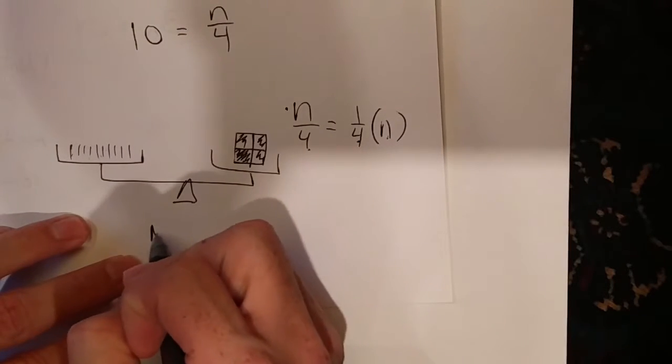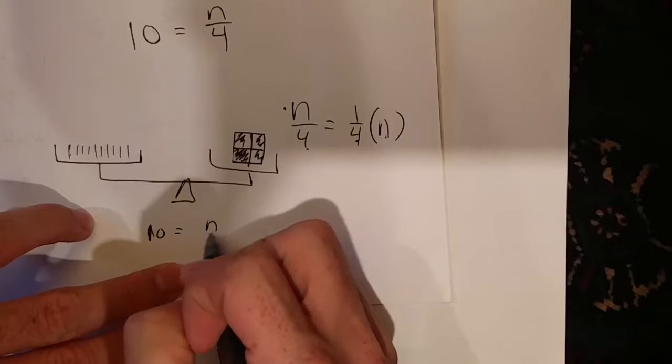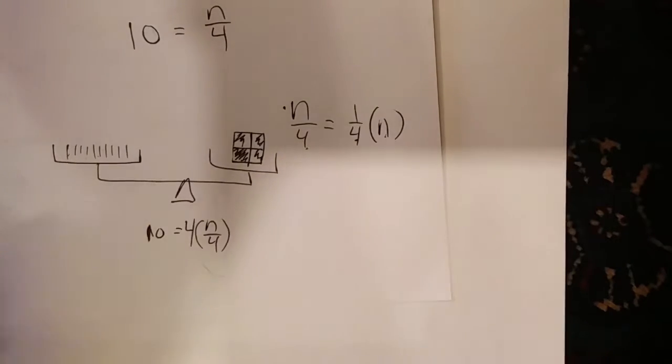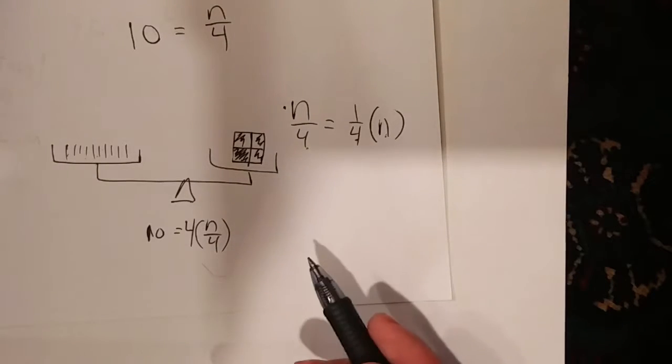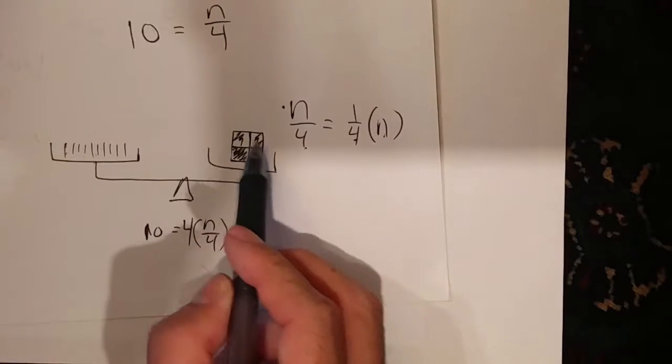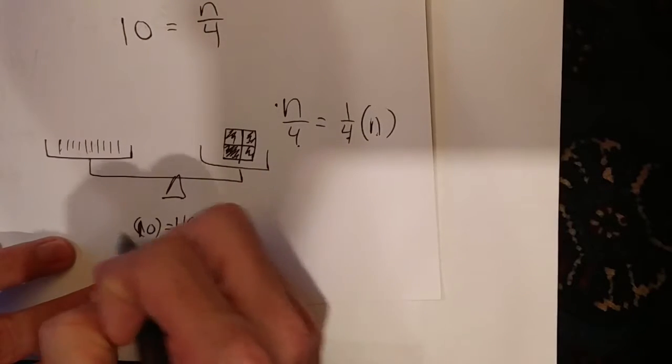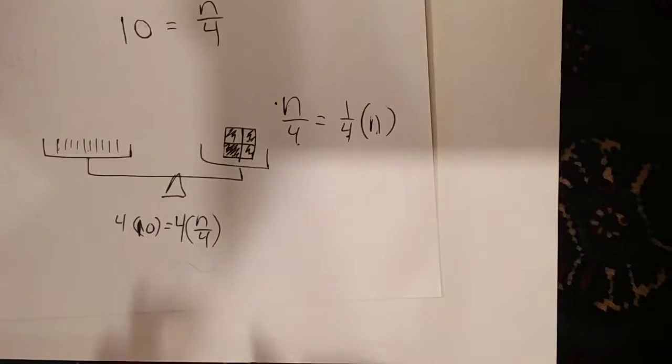So if I have 10 is equal to n over four, I'm going to take this whole thing and multiply it by four. Now when I multiply it by four, that means I have one two three four. In order to keep this balance, I have to multiply the other side by four as well.